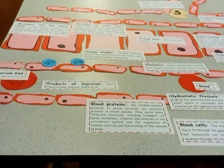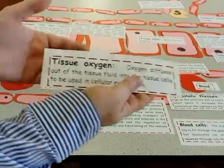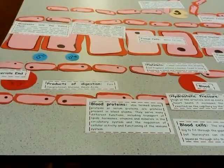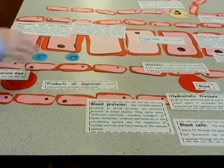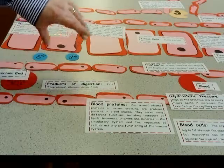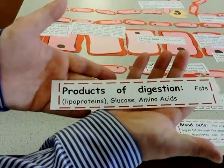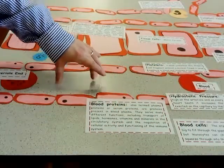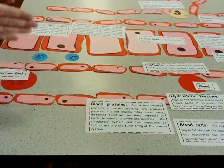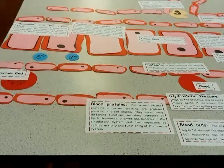Once the water has moved into the tissue fluid, it carries with it oxygen, which diffuses out with the water that's moving into the tissue fluid. The oxygen is then used by the tissue cells in respiration. At the same time, other products of digestion — fats, glucose, amino acids and such forth — also move out of the blood due to the high hydrostatic pressure into the tissue fluid, where they can be used by the cells.